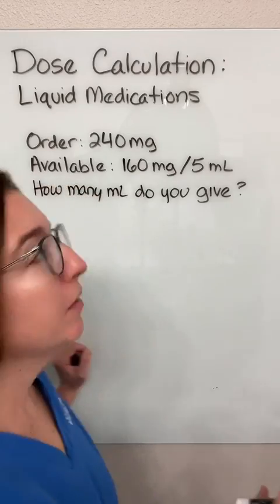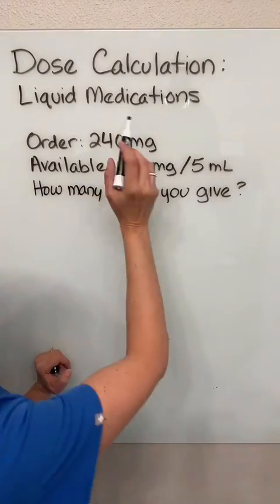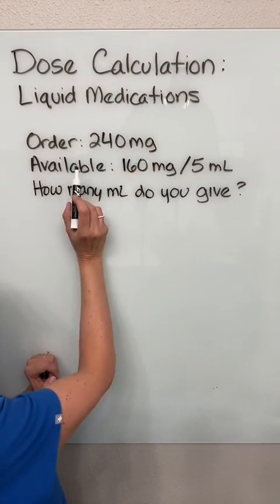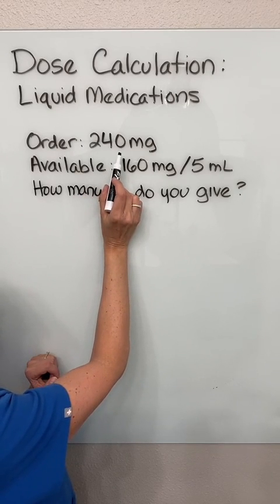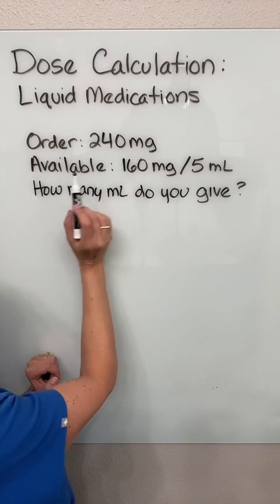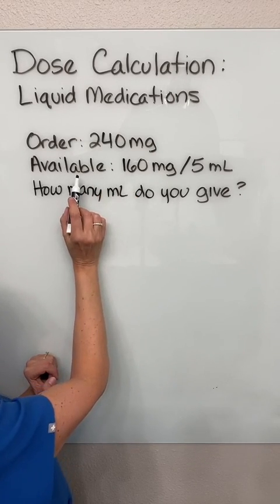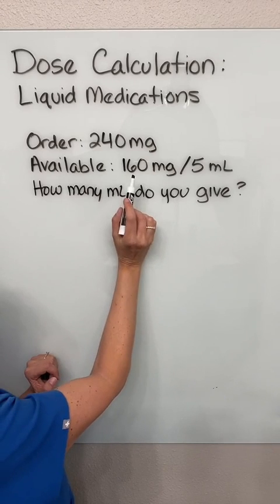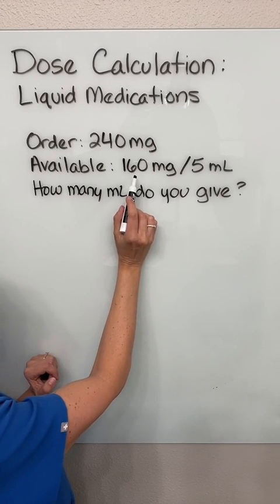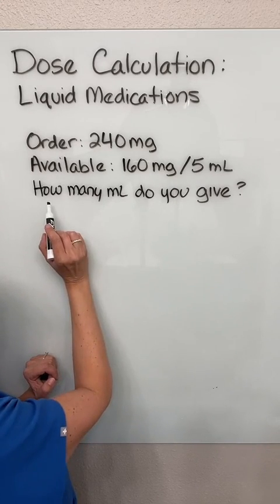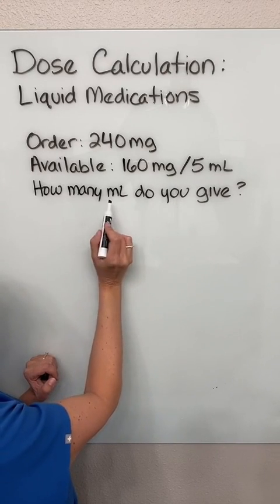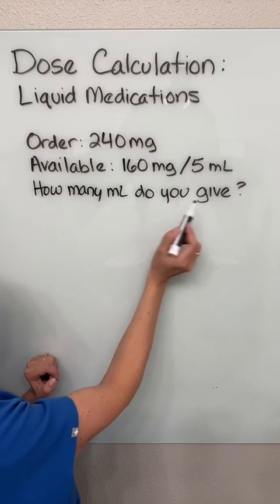In this problem, we have an order for a liquid medication, and the order is for 240 milligrams. What we have available is a concentration of 160 milligrams in 5 mLs of solution, and we need to find out how many milliliters we should give.